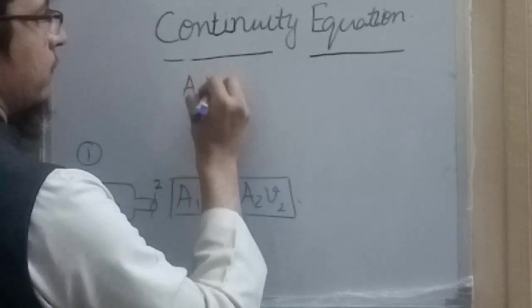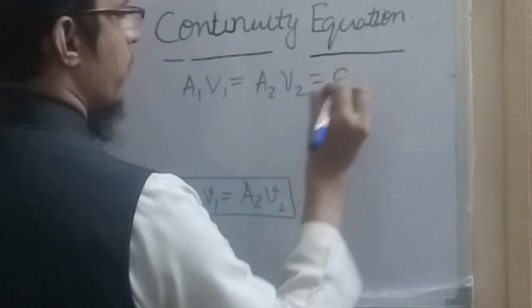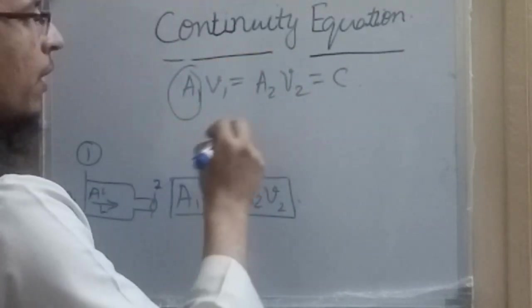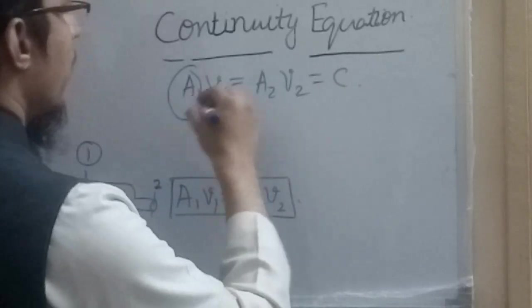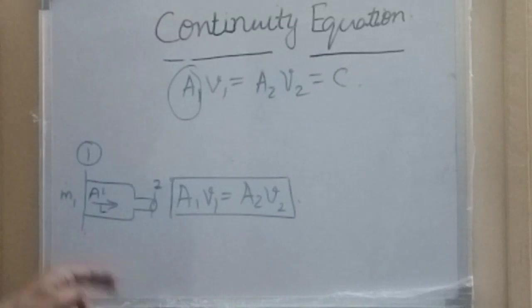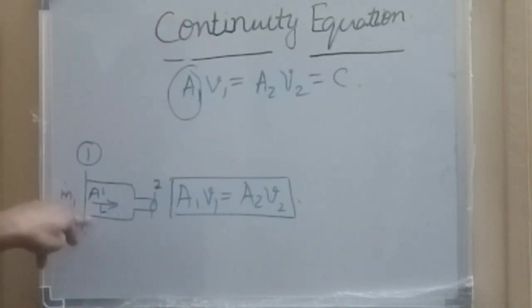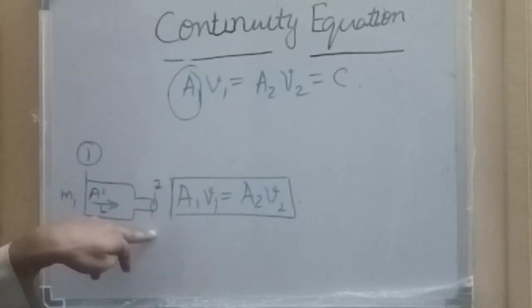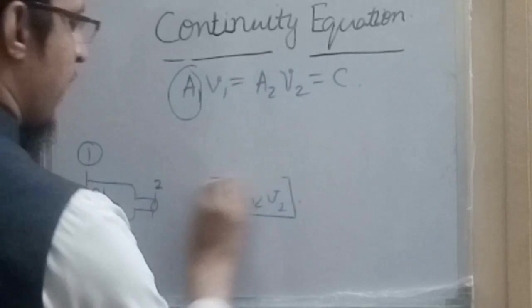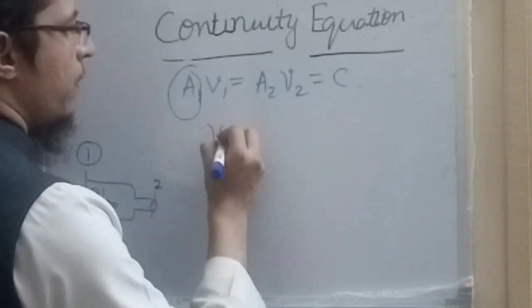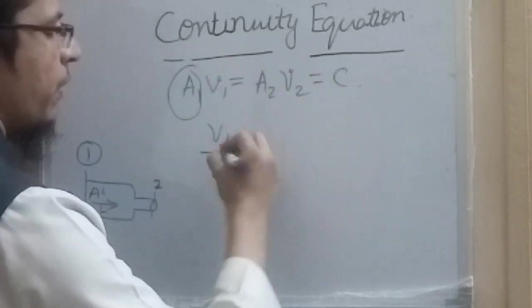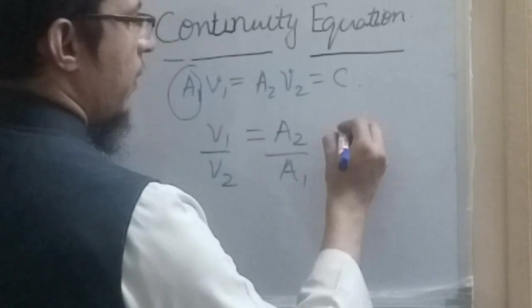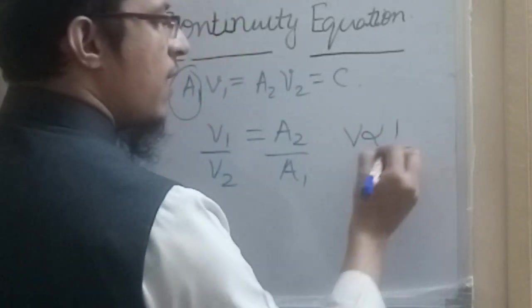Since A1 V1 equals A2 V2 equals a constant, if the area decreases then velocity increases to maintain that constant. From the equation, V1 over V2 equals A2 over A1, so velocity is inversely proportional to area. When area increases, velocity decreases; when area decreases, velocity increases.